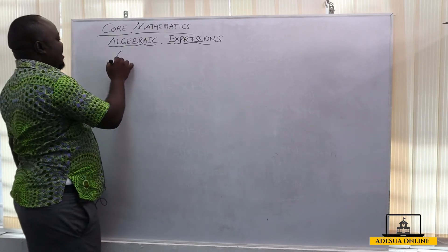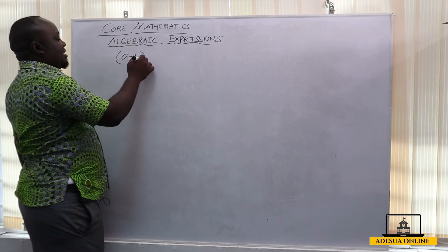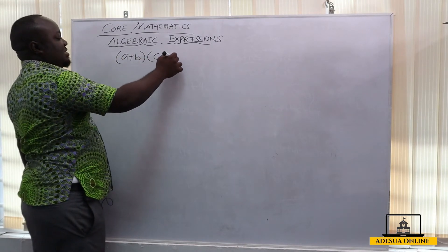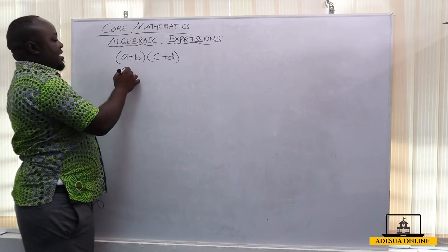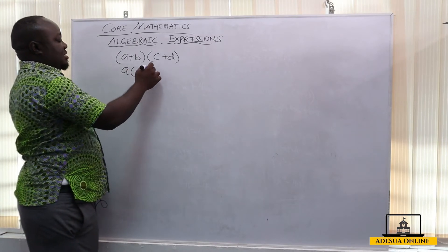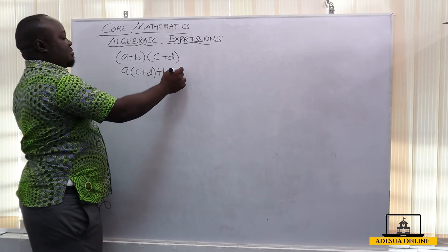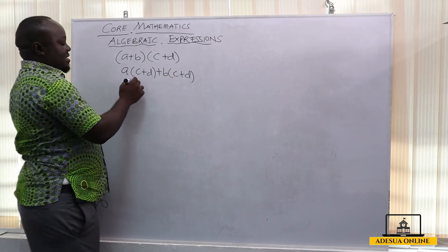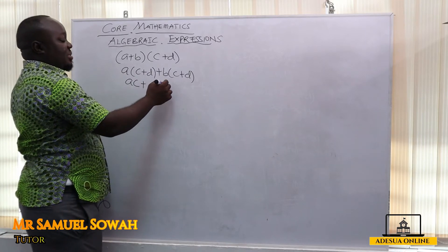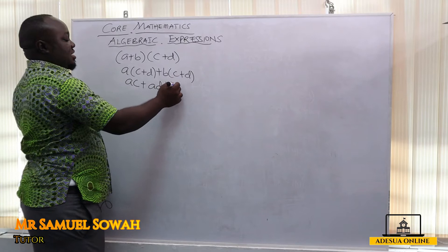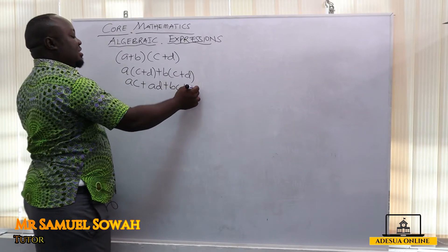So assuming I have a plus b and then I have c plus d and I want to expand this. So this becomes a into c plus d plus b into c plus d. So I am going to get ac plus a times d is ad. Now we move to the next bracket plus b times c is bc and then bd.